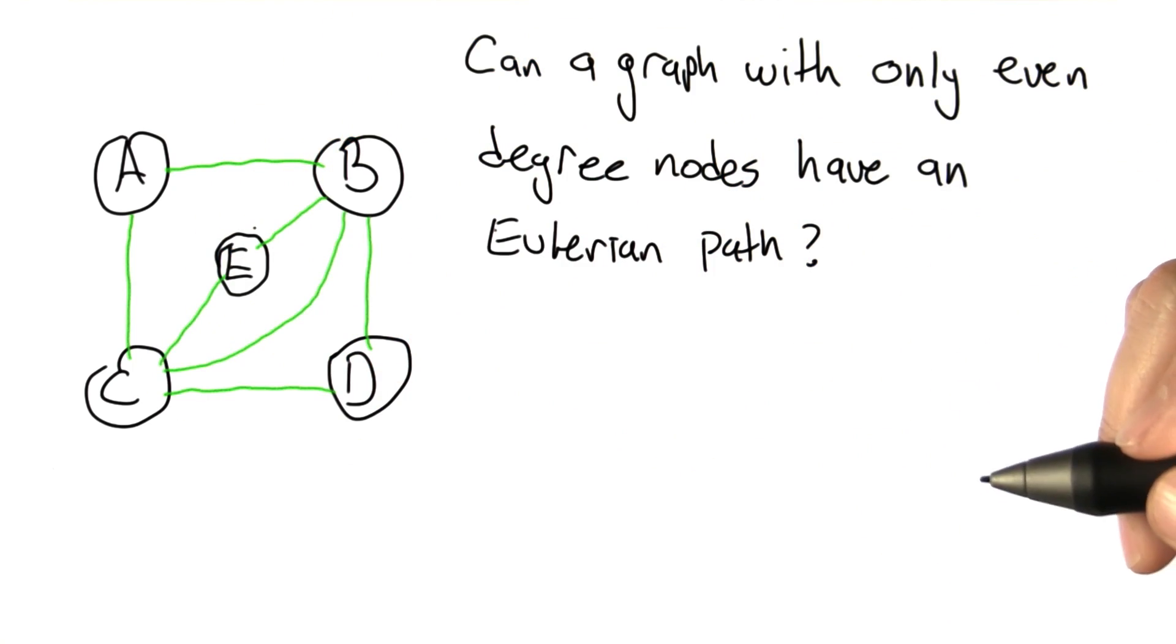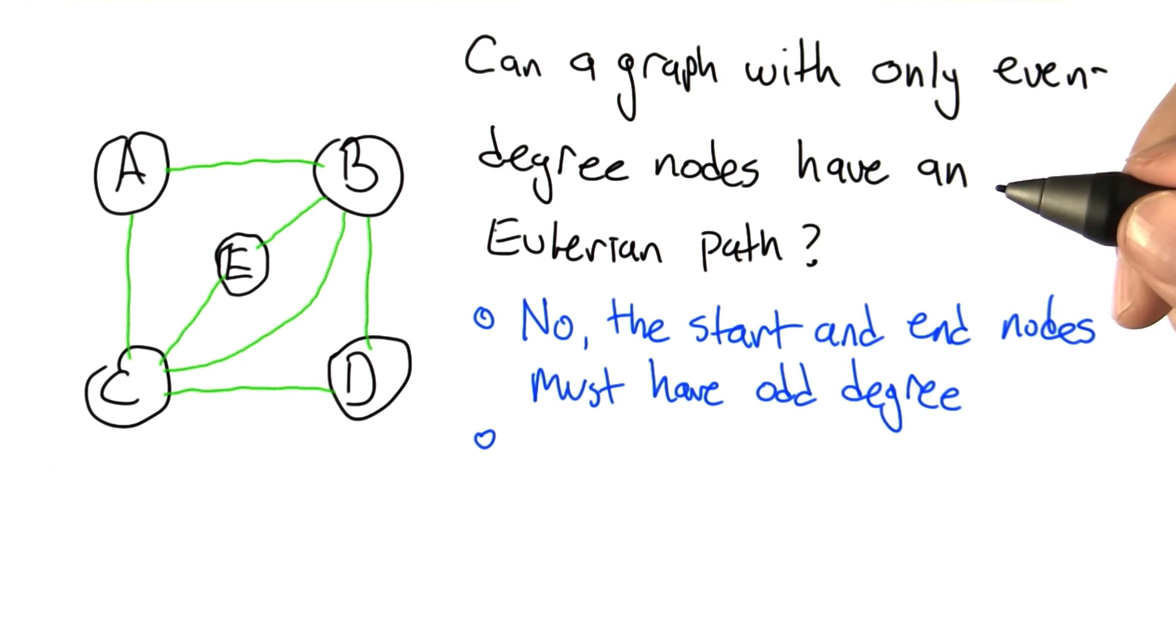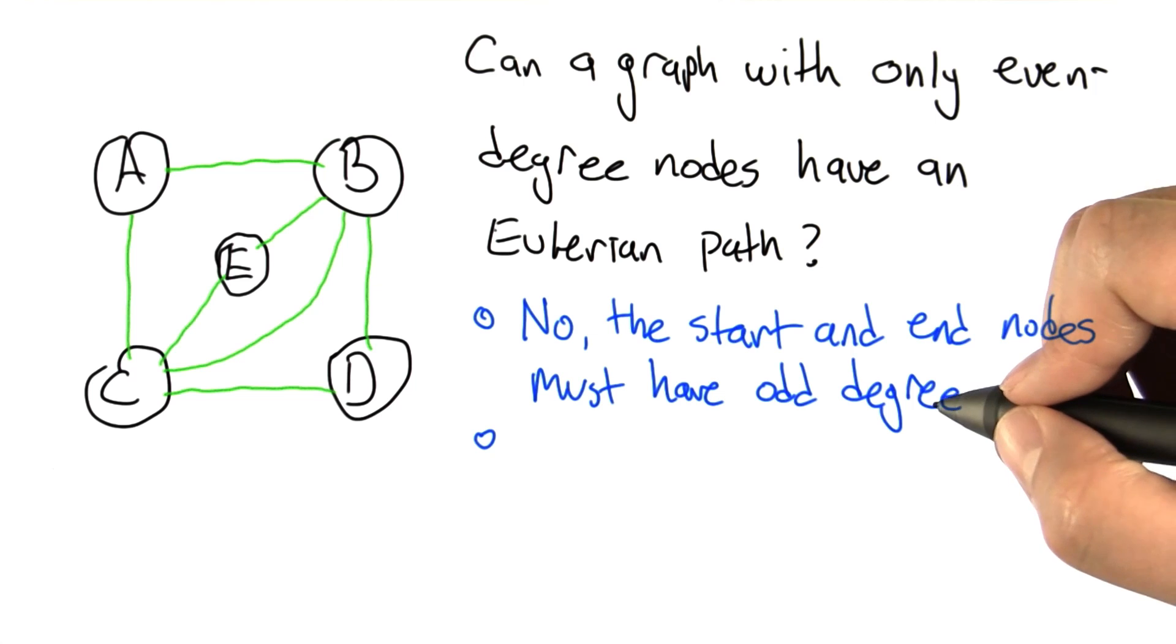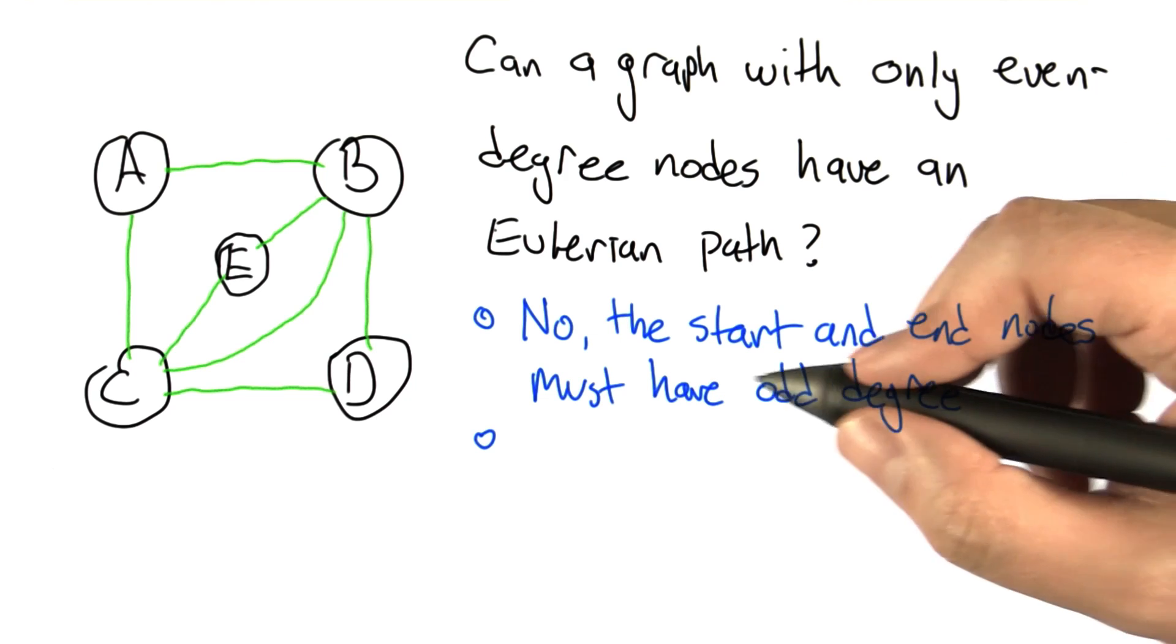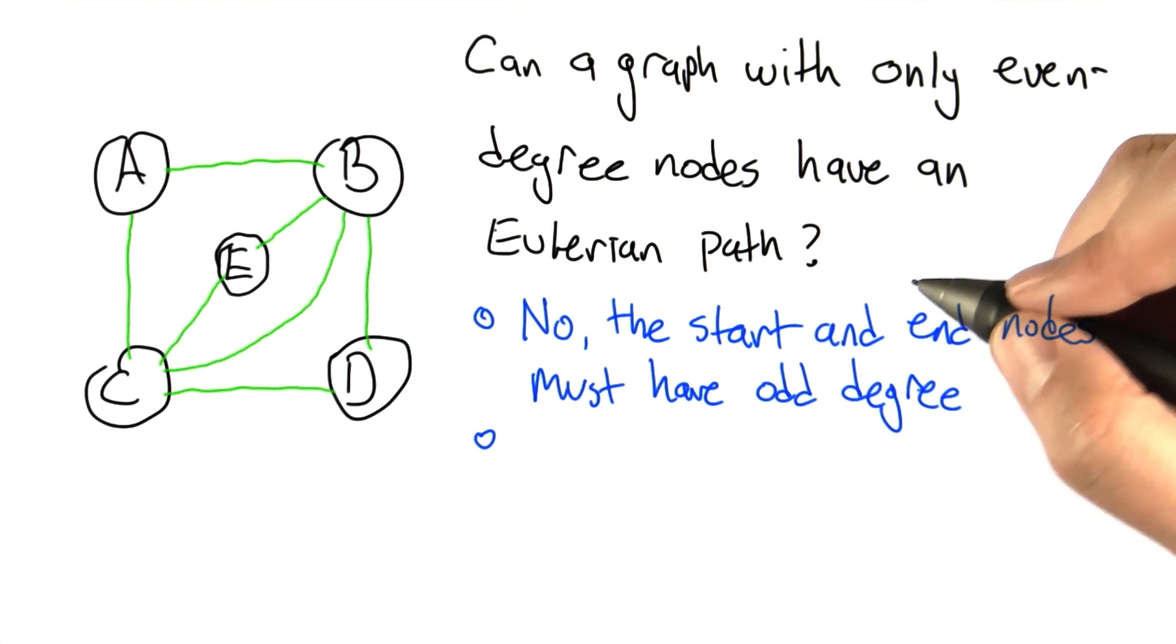Can a graph like this with only even degree nodes have an Eulerian path? So one possible answer is no, the start and the end nodes of the path have to have odd degree, which they wouldn't in this case, so it can't have an Eulerian path.